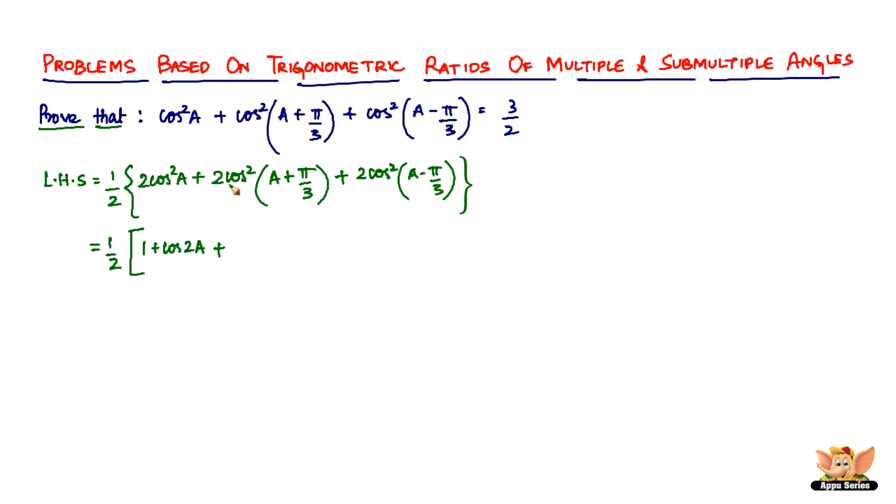Now 2cos²(a + π/3) - it's nothing but 1 + cos[2(a + π/3)] = 1 + cos(2a + 2π/3). Plus, the same thing: 2cos²(a - π/3) = 1 + cos(2a - 2π/3). These all come under the bigger bracket.